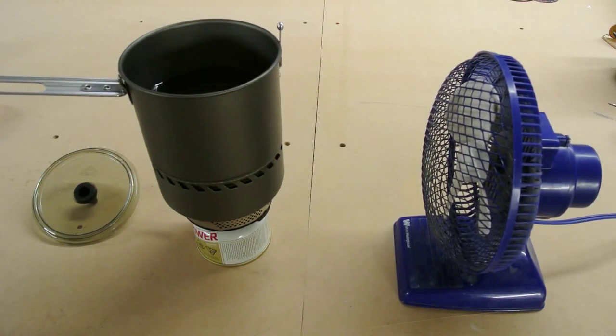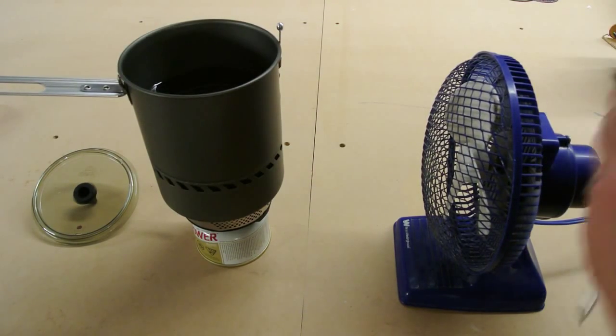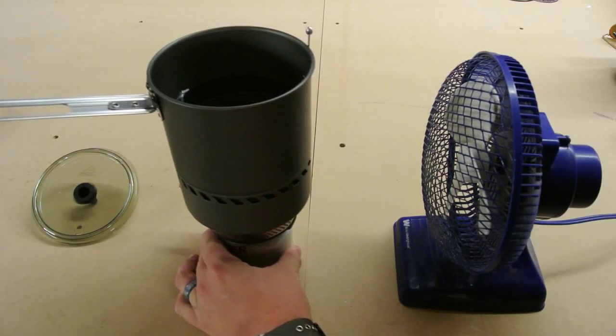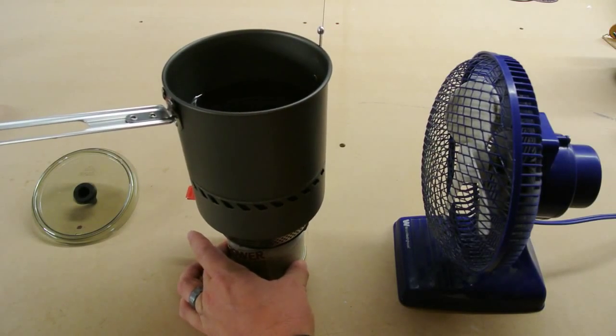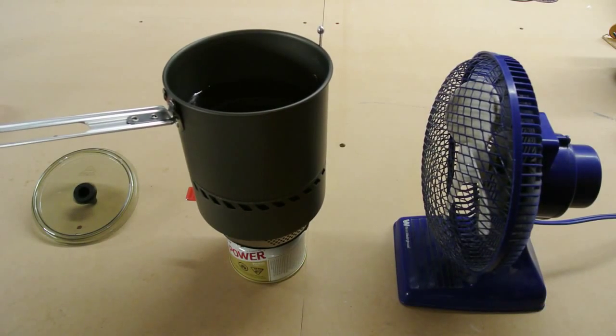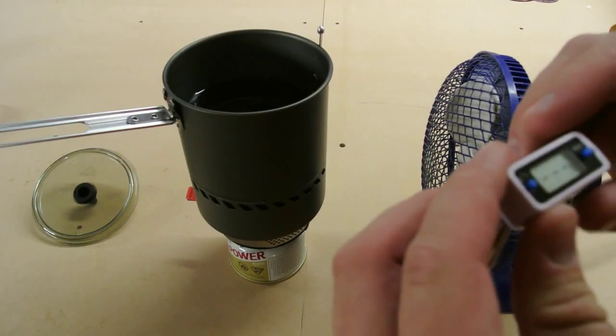So right now we have one liter of water in this pot. On the previous test with the Jetboil, we had it sitting right there. I haven't moved the fan, but we'll double check speeds with the weather meter here in a second.